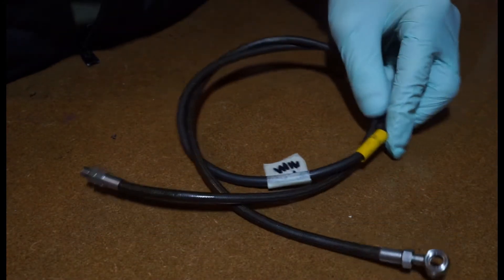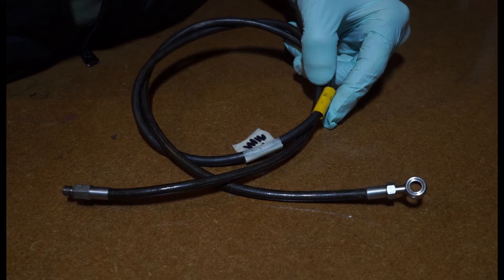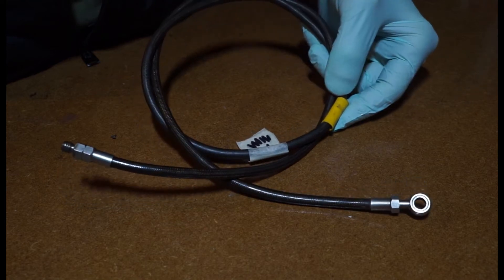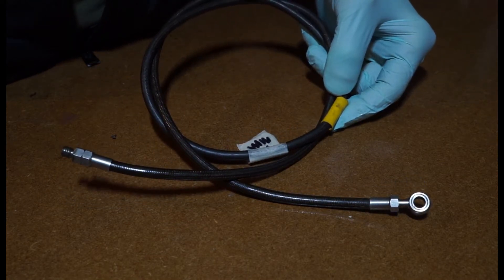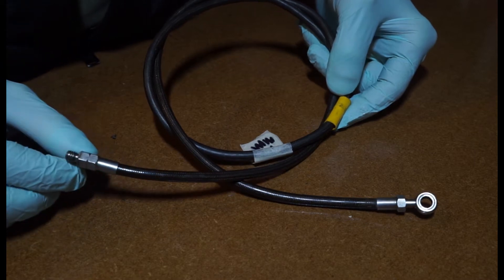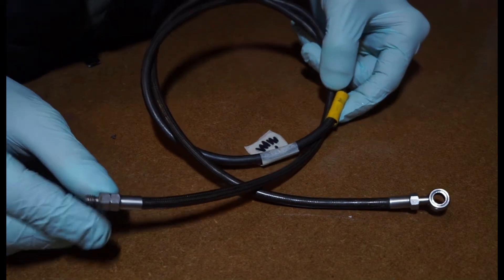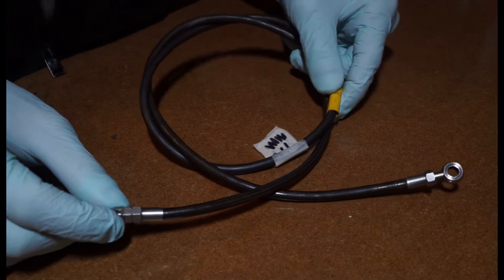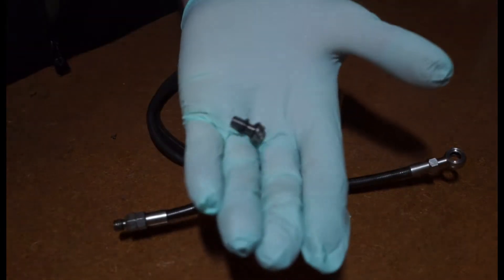I just want to do a quick video on these old Goodrich hoses that they made for Hope back in the day. They're pretty decent. I do prefer the Hope braided hoses because the clamp is a little bit more permanent inside. It's a stronger system in my opinion.